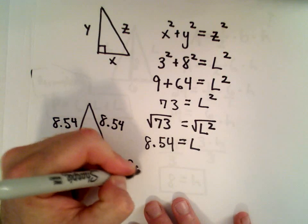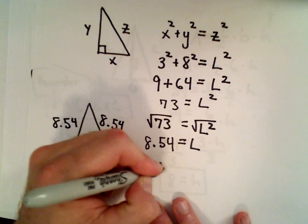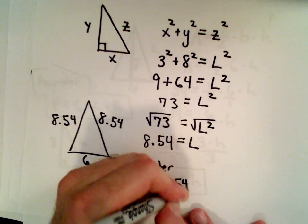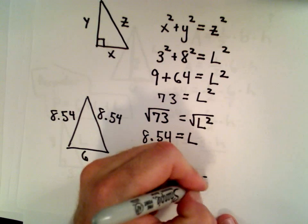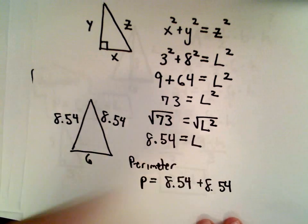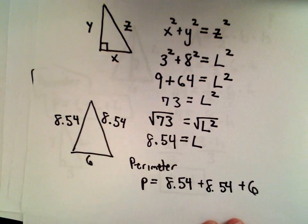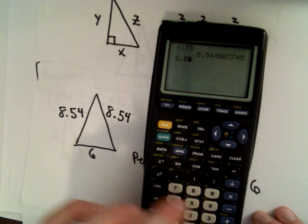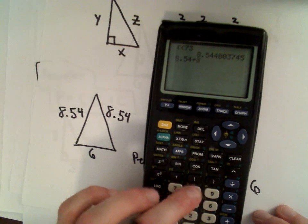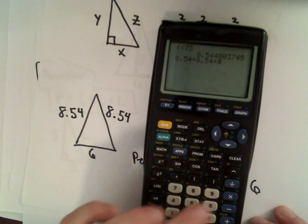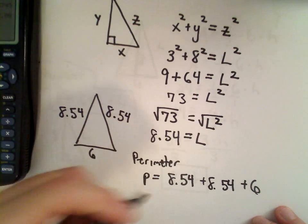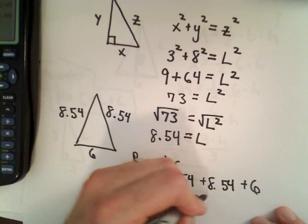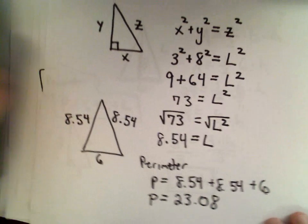So the perimeter in this case, that's going to be 8.54 plus 8.54 plus 6. So again, I'm just going to put this in my calculator, and then we will be done. So 8.54 plus 8.54 plus 6. I'm getting 23.08 as being the perimeter of our triangle.